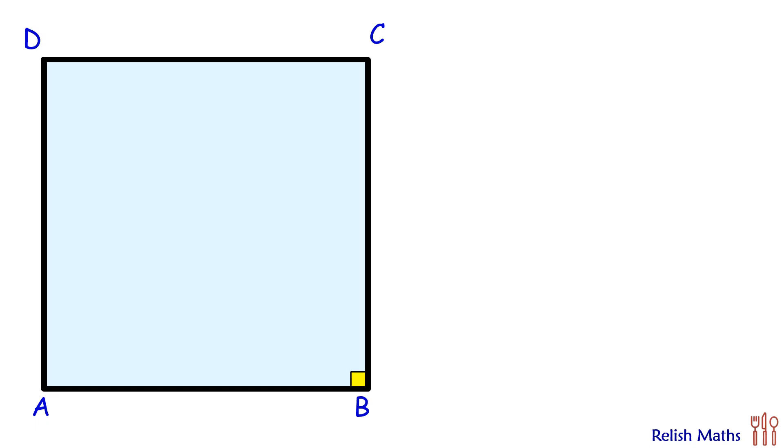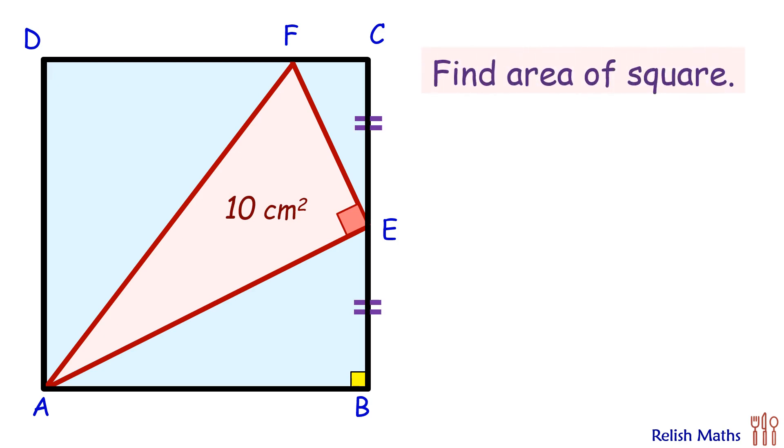In this question, given is ABCD is a square. Inside it we have inscribed a right-angle triangle AEF such that E is the midpoint of BC. If the area of triangle is 10 cm², using this data we have to find the area of square ABCD.